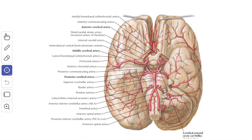Clinically, cerebral thrombosis most commonly affects the middle cerebral artery or its main branches, because it is a direct continuation of the internal carotid artery.